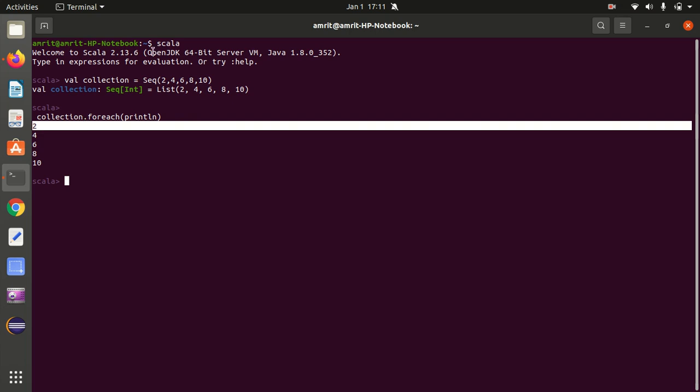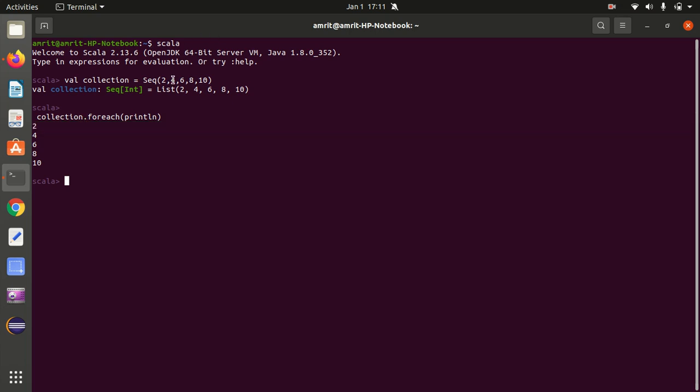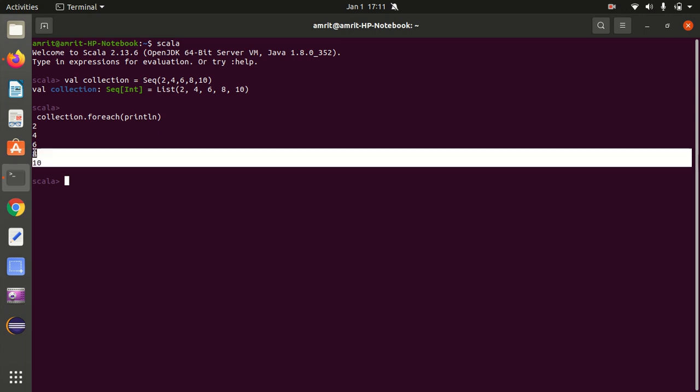Foreach then goes to the second element of collection that is 4 and performs println method on it. This results in printing of 4. This continues until foreach has traversed through all the elements of collection.